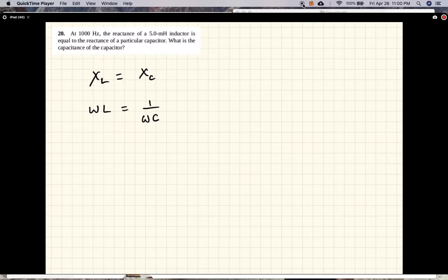So the capacitor is what we're trying to find. C is 1 over omega squared L, and omega is 2 pi F squared times L.